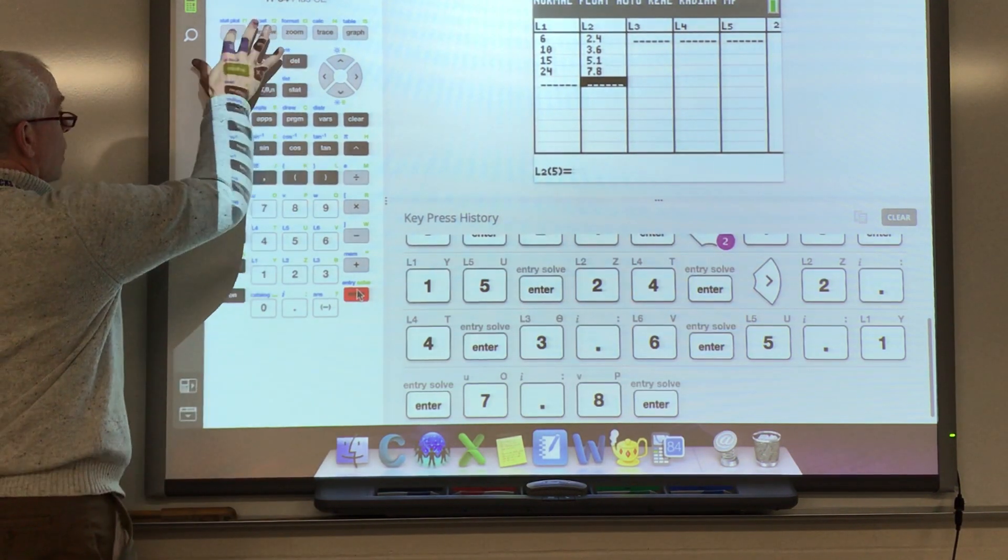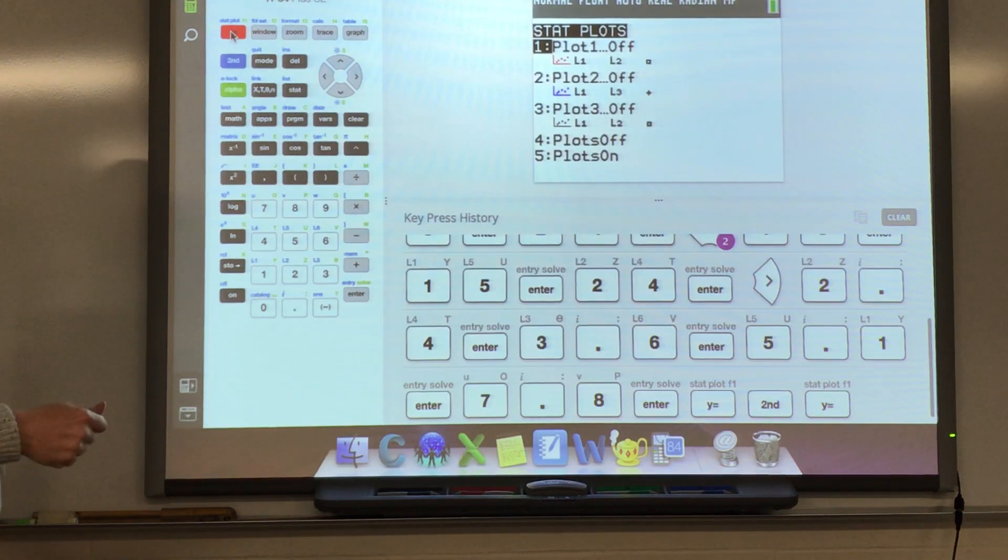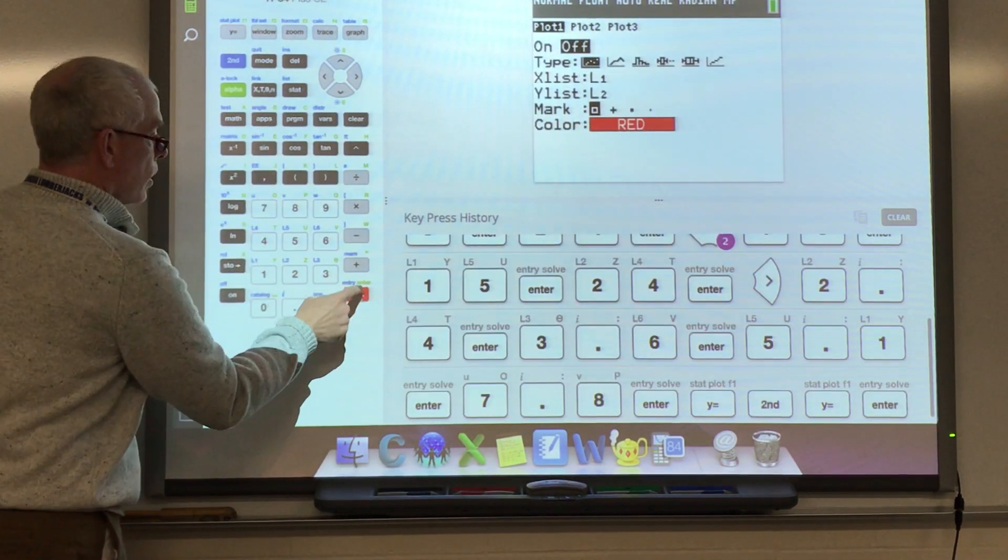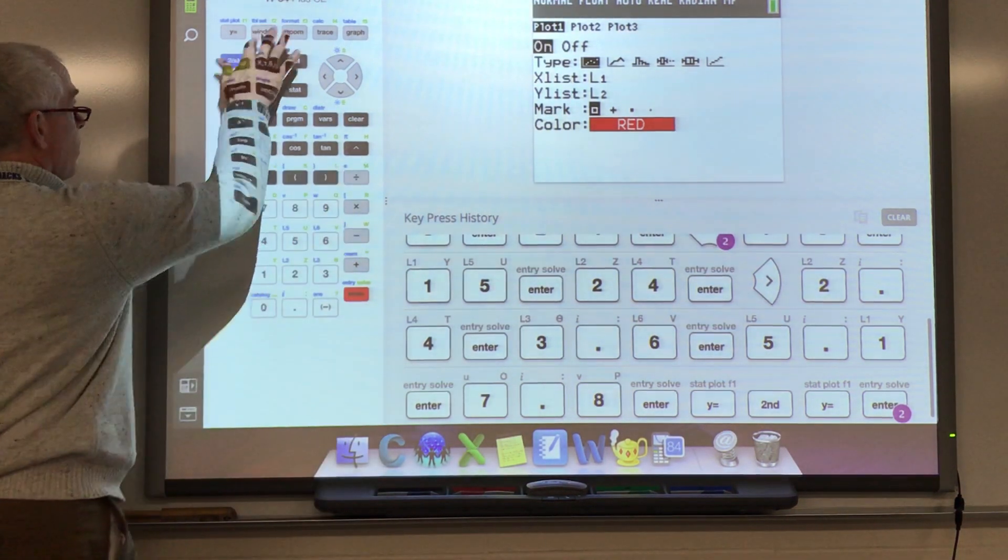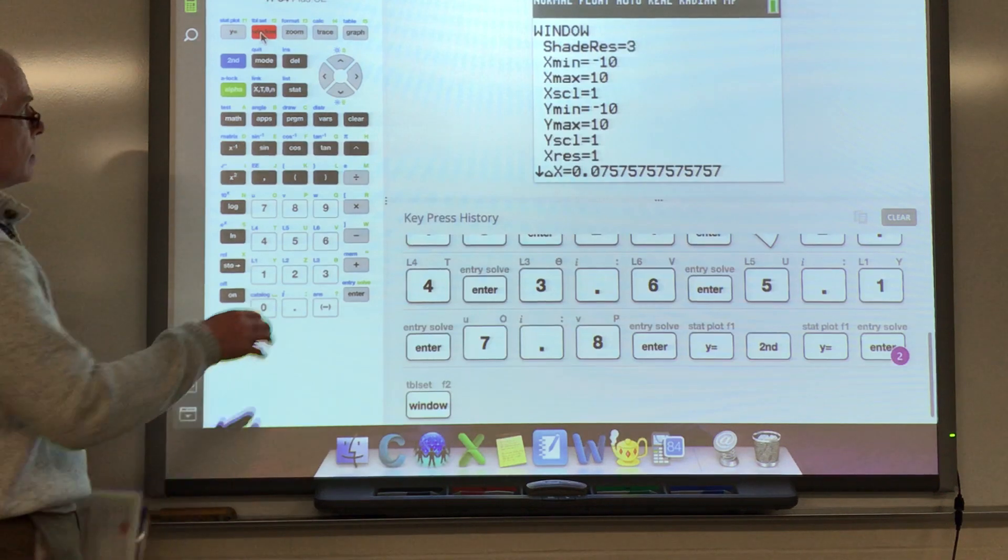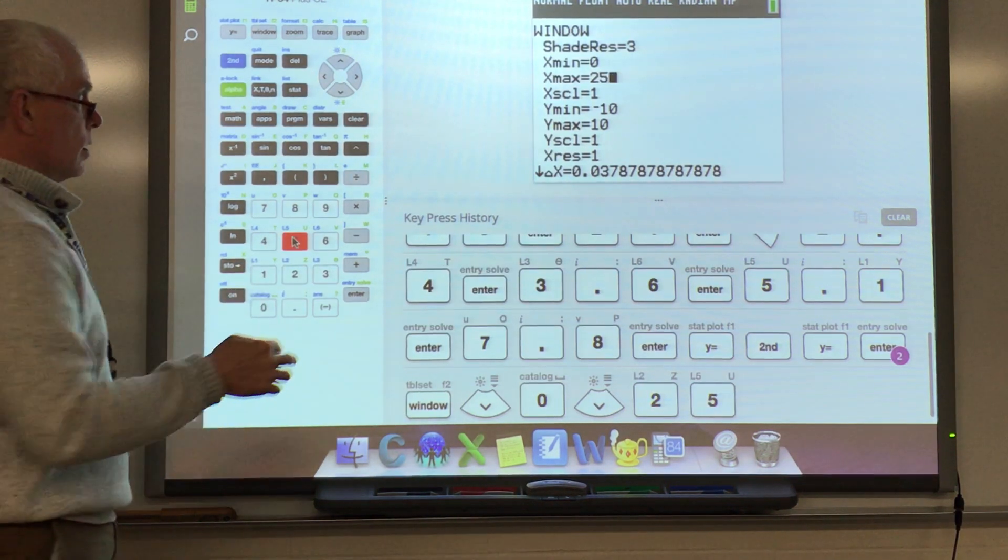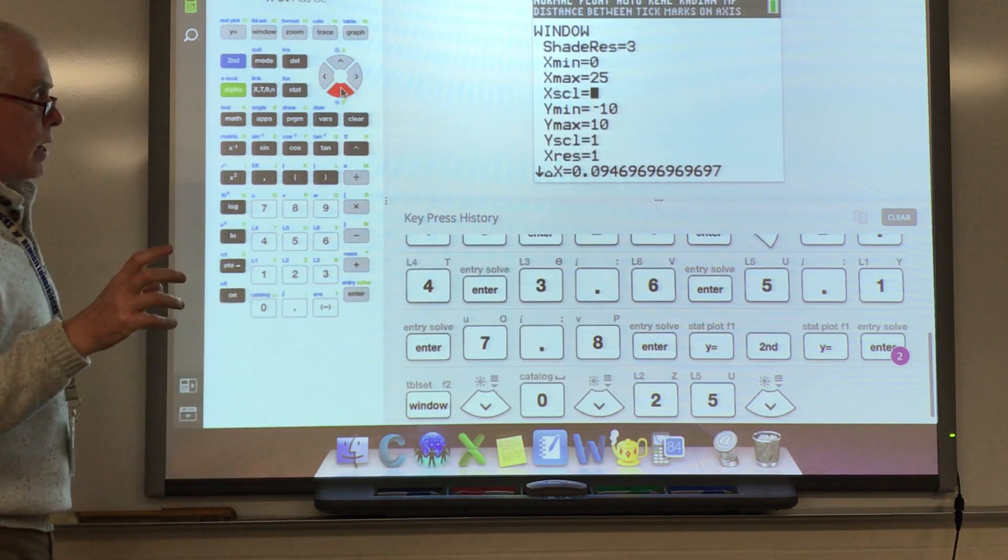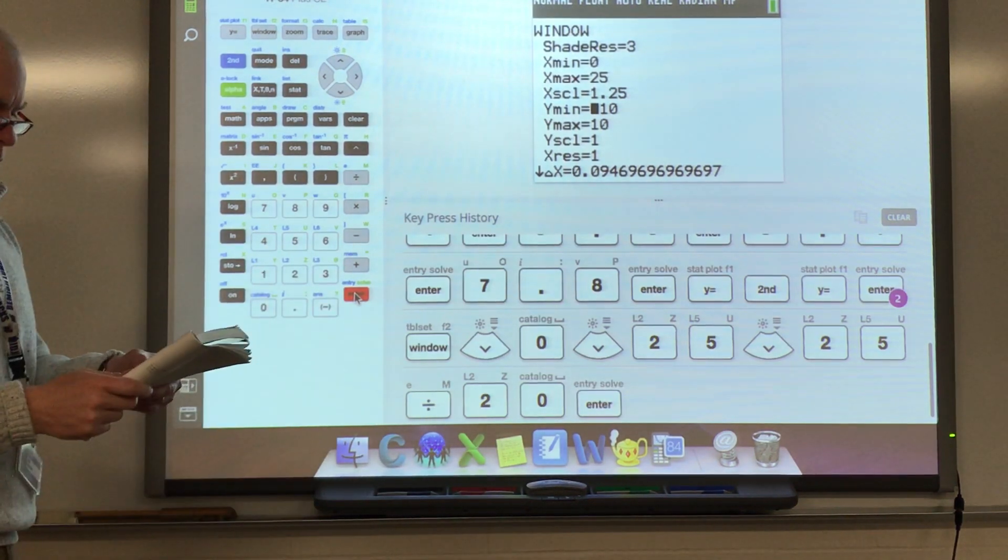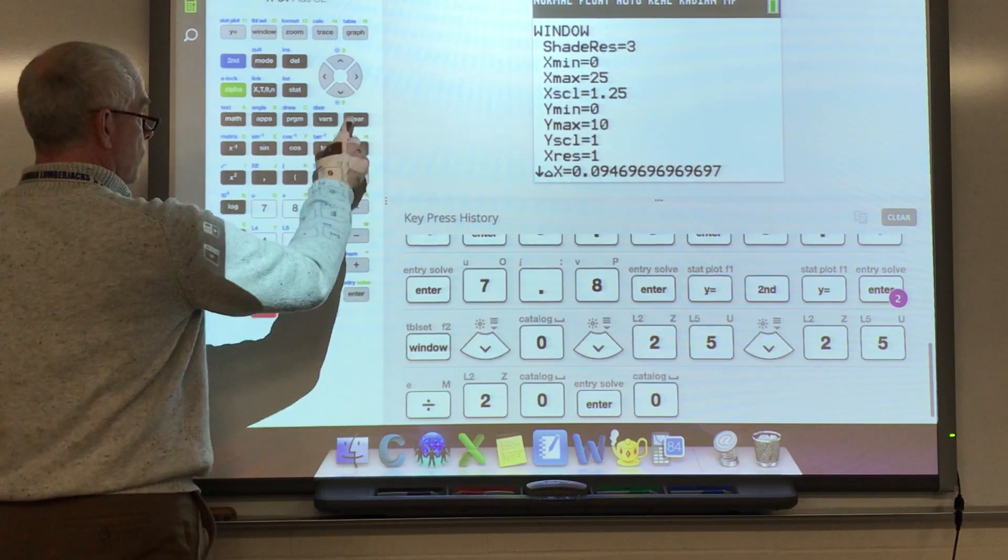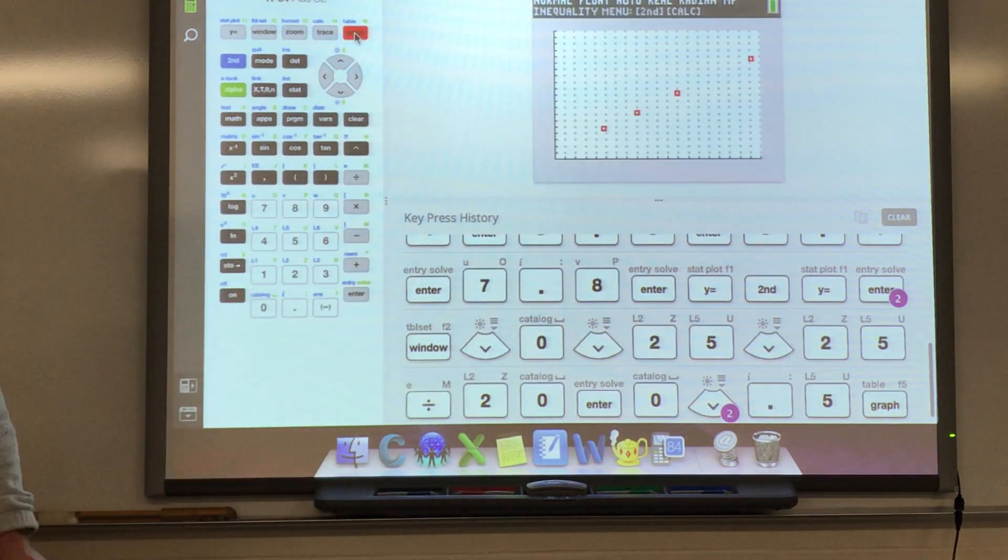Now, we're going to do a couple things if I want to graph this. One is I need to make sure I don't have anything else in my y equals. Two, I'm going to go to second stat plot, which is above the y equals. I'm going to choose my first plot, turn it on by pressing enter. The scatter plot is chosen and list one and list two are my x and y axis. Now I'm going to go to my window. X was our number of nuggets here. So we're going to start at zero and go to 25 because 24 nuggets was the most. I always divide my range 0 to 25 by 20, so 25 divided by 20. Y, my prices go from $2.40 to $7.80. So if I go from 0 to 10, that's more than enough. I've got a scatter plot. It looks very linear.